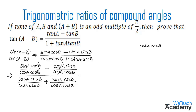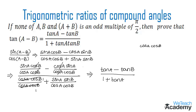cos A cos B gets cancelled both in the numerator as well as in the denominator. Here in some terms there are no common terms so they remain the same. We get sin A by cos A which is tan A, minus sin B by cos B which is tan B, whole divided by 1 plus sin A by cos A which is tan A, into sin B by cos B which is tan B.